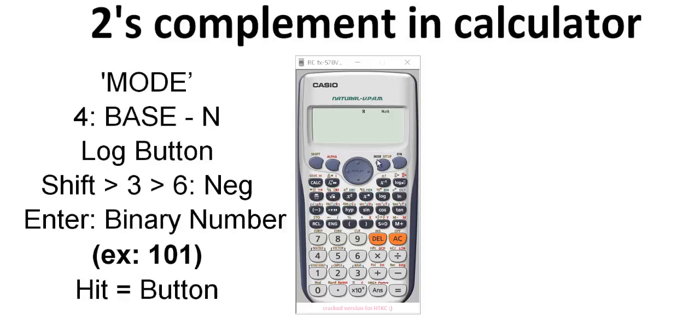So at first we need to click on the mode button. Now select the 4 option base. Now we need to change the mode from decimal to binary.